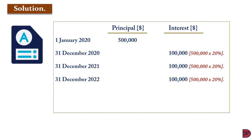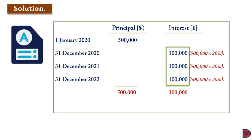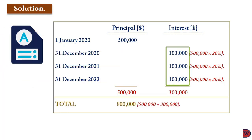A year afterwards, 31st December 2022, the interest will also be $100,000. At the end of December 2022, the principal will still be $500,000. The accumulated interest over the three years is $300,000. So the total amount for Edlin will be $800,000.